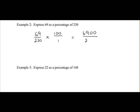That gives us 6900 divided by 230. And if we put that into the calculator, you should get an answer of 30%. So 69 is 30% of 230.